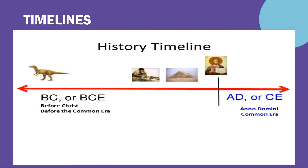Historians developed a special method of counting the years. They use the letters BC or BCE and AD or CE. History is divided into two parts: BC and AD, or BCE and CE.